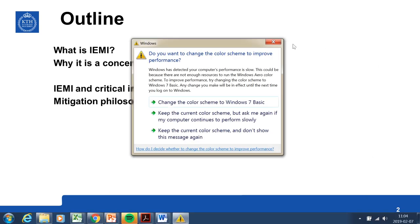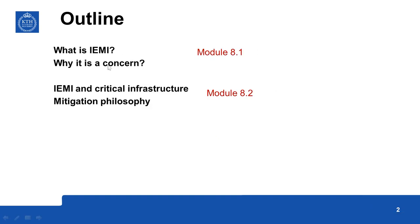In module 8.1 we will look at what is meant by IEMI, what are the main characteristics, and how intentional EMI is different from normal electromagnetic interference and why it is a concern. Then in module 8.2 we will take up critical infrastructure — power lines, communication lines, economic infrastructure — everything required for the smooth functioning of society, as it is often an attractive target for rogue elements. We will look at mitigation philosophy applied to IEMI.